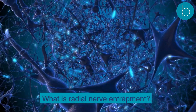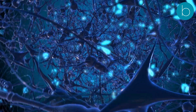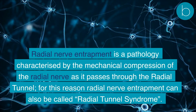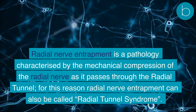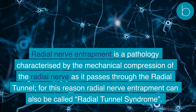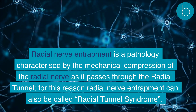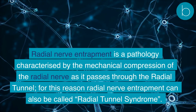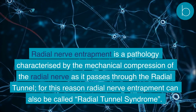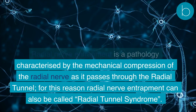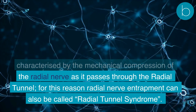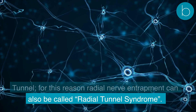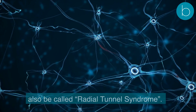What is radial nerve entrapment? Radial nerve entrapment is a pathology characterized by the mechanical compression of the radial nerve as it passes through the radial tunnel. For this reason, radial nerve entrapment can also be called radial tunnel syndrome.